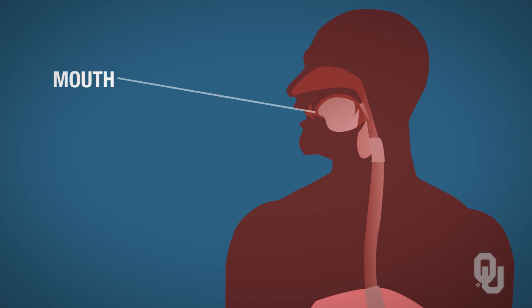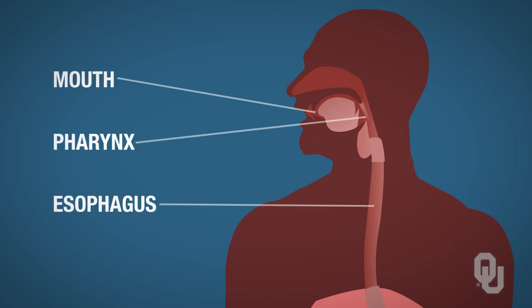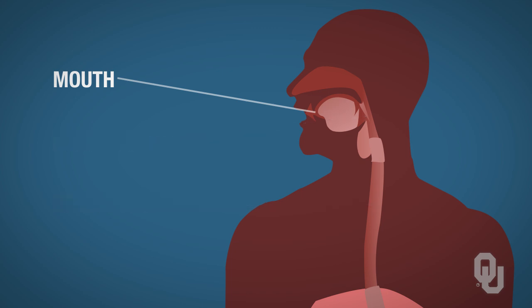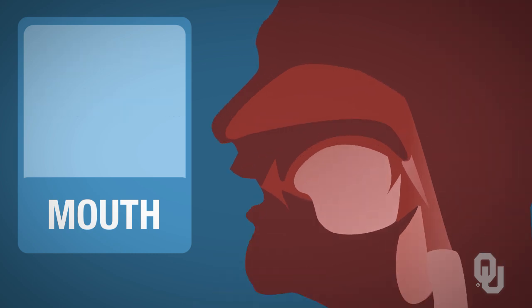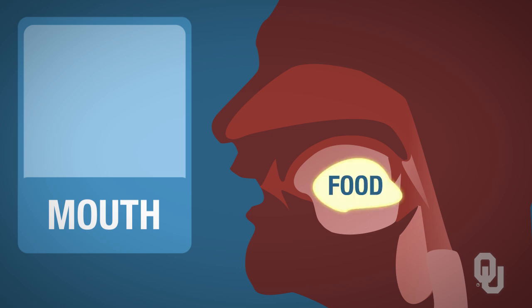We're going to start with the mouth, pharynx, and esophagus, and work our way through each of the other structures. The mouth is where food has to enter the gastrointestinal system. The mouth is where both mechanical and chemical digestion begin — mechanical in terms of mastication, or chewing of the food, and chemical in terms of various enzymes. When you're chewing your food, saliva mixes with enzymes to help promote digestion.